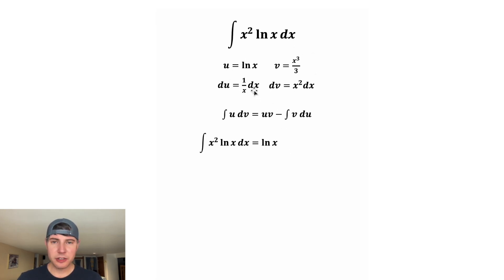Let's fill this out. So the u is going to be lnx, v is going to be x cubed over 3. Now let's change the order. And then we're going to subtract the integral of v, which is x cubed over 3, times du, which is 1 over x dx.